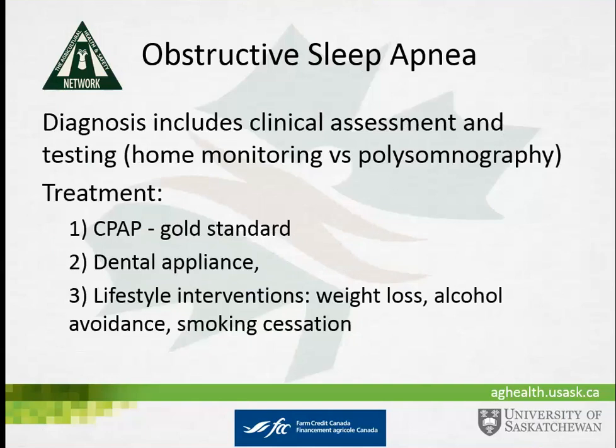Treatment is generally CPAP — Continuous Positive Airway Pressure — which is the gold standard. It definitively eliminates the throat obstruction problem. A second-line treatment is a dental appliance that holds the jaw in place to prevent it from falling back, most appropriate for mild sleep apnea. Lifestyle interventions are also important: weight loss if overweight, avoidance of alcohol in the evenings since alcohol has a permissive effect on throat collapse, and smoking cessation as nicotine is an airway irritant.